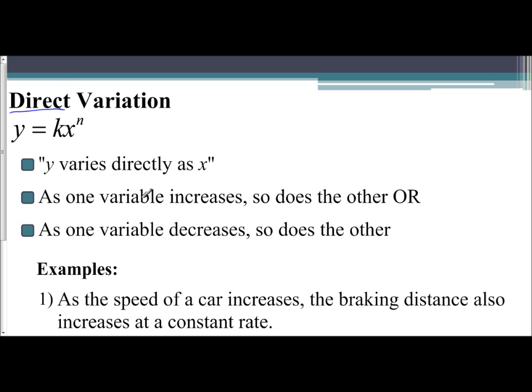In other words, as one variable increases, so will the other. Or as one variable decreases, so will the other. A direct relationship means they do the same thing—if one variable increases, so does the other; if one decreases, so does the other.